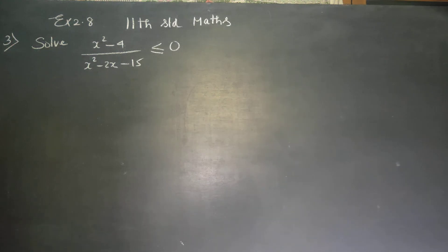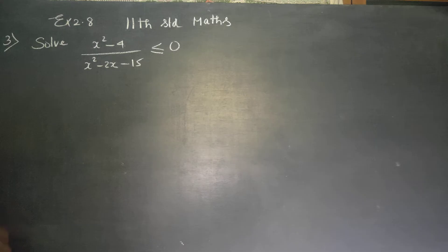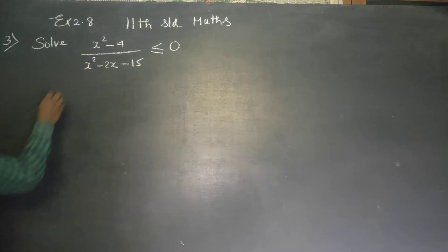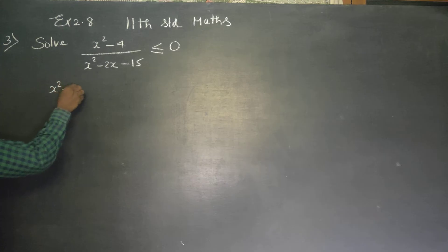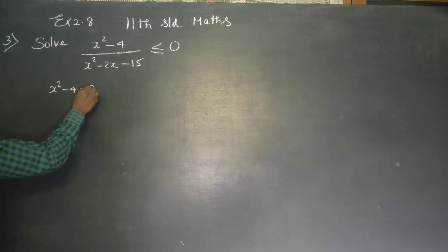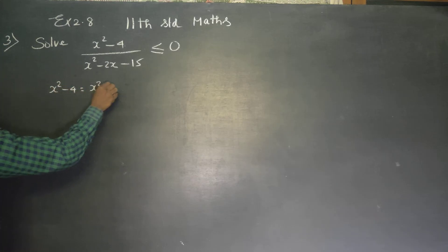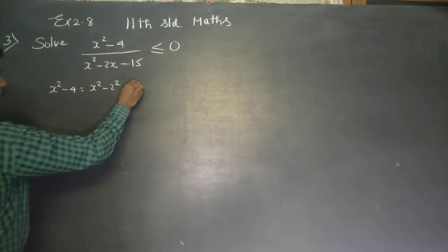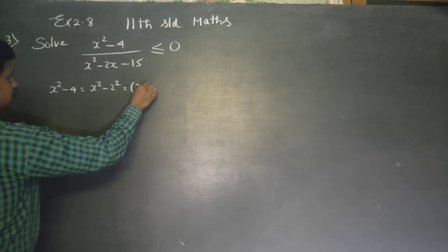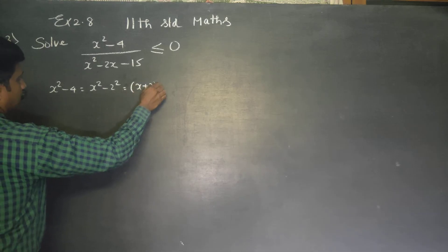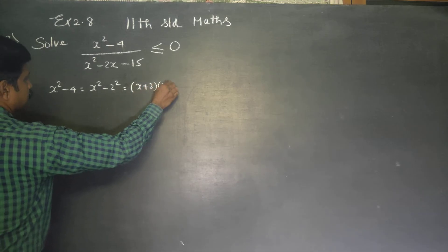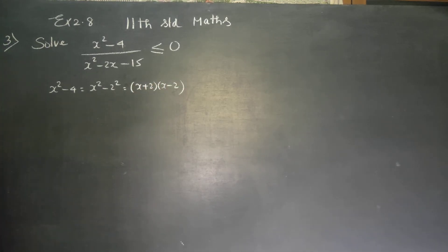Dear students, I will factorize this expression. First, x squared minus 4 can be written as x squared minus 2 squared, which gives us x plus 2 into x minus 2. This is my first factor pair.